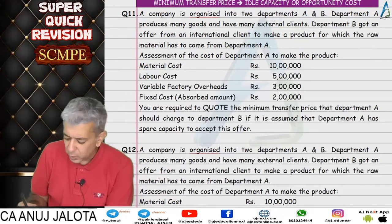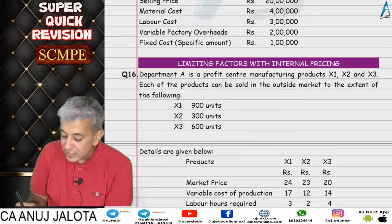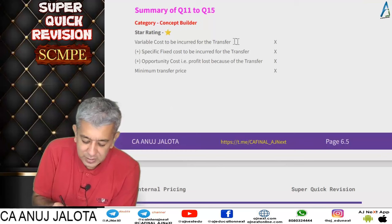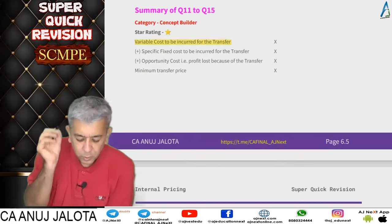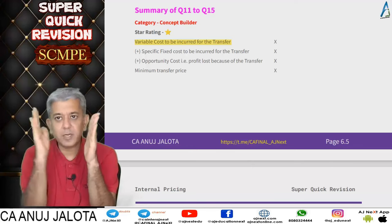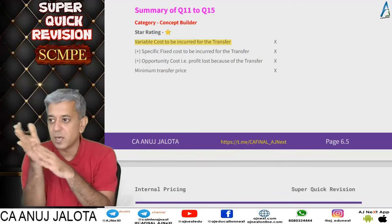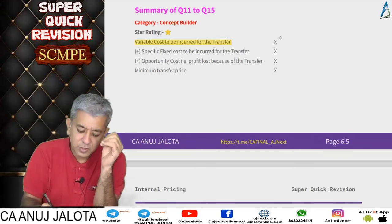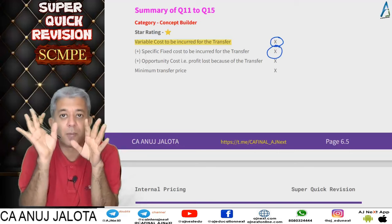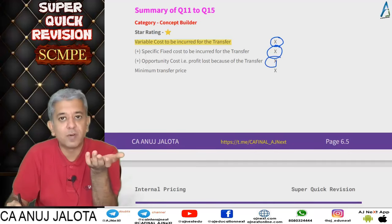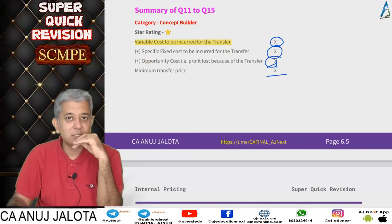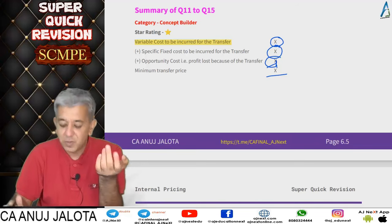Questions 11 to 15 were all concept-based questions. In each case, the only thing needed is to find the minimum transfer price. The formula is always: whatever goods the transferring department is transferring — first write down variable cost, then any specific fixed cost (not absorbed fixed cost, only what is specifically spent), then add opportunity cost if any amount is being lost. The total is the minimum transfer price, below which the first division will not accept any deal.